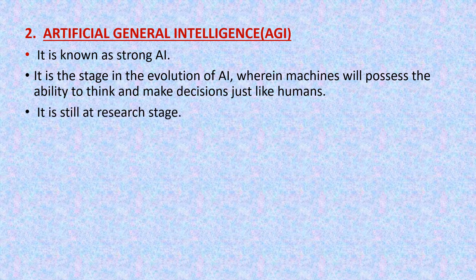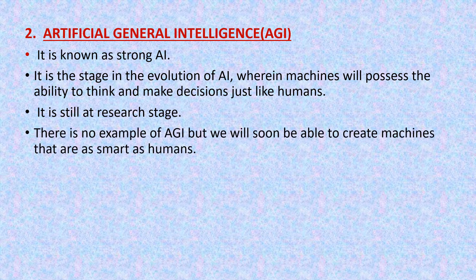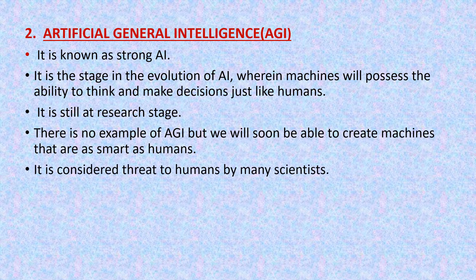AGI is still at research stage. Scientists are still working on artificial general intelligence. There is no example of AGI, but we will soon be able to create machines that are as smart as humans. As we have discussed, it is still at research stage, so we don't have any examples of AGI, but soon in future we will have machines which are as smart as humans. It is considered a threat to humans by many scientists.